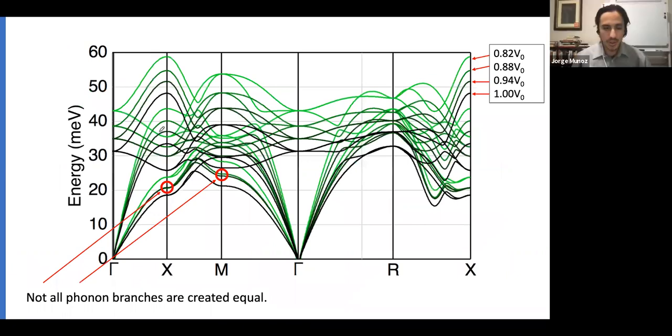We did a more detailed study of the phonons. This is the phonon dispersion curves at four different volumes. The lighter green is at higher pressure or reduced volume, and the darker one is at 1.0, the equilibrium volume. Most of them increase in energy when compressed, but not all.